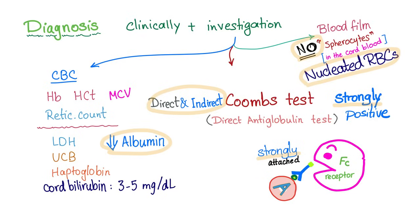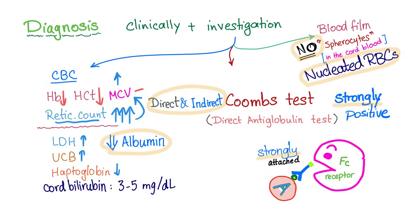To diagnose RH incompatibility — erythroblastosis fetalis — we use clinical findings plus lab investigations. On CBC: hemoglobin is low, hematocrit is low, MCV is usually normal (normocytic anemia). If the anemia is severe, reticulocyte count will be very high — and high retic count can raise MCV because reticulocytes are large, immature cells. LDH will be high, unconjugated bilirubin will be high, haptoglobin will be low. Cord bilirubin will be between 3 to 5 mg/dL if there is anemia.